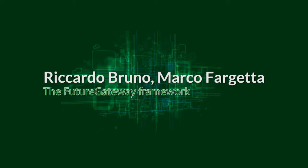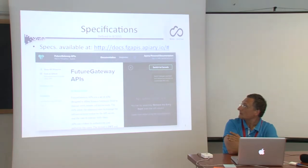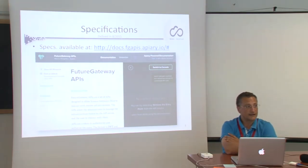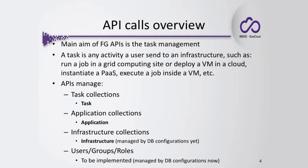Let's move on to the API part and start talking about the APIs from their specifications. They were defined in August 2015 — the date is not really precise — and they were written in the API specification format. The specifications are available on the internet using the link specified in the slide.